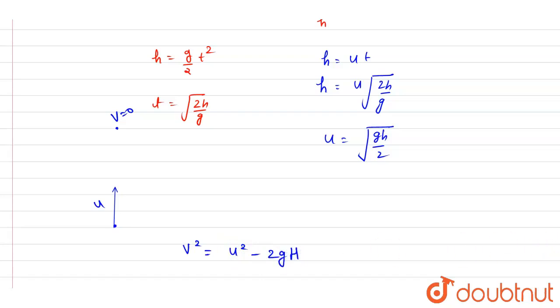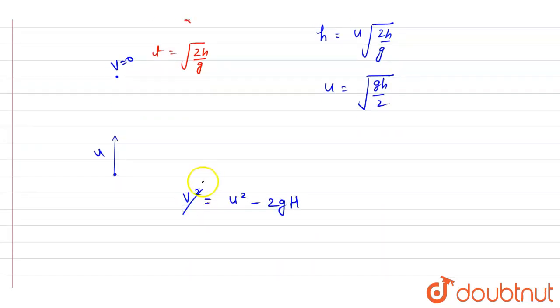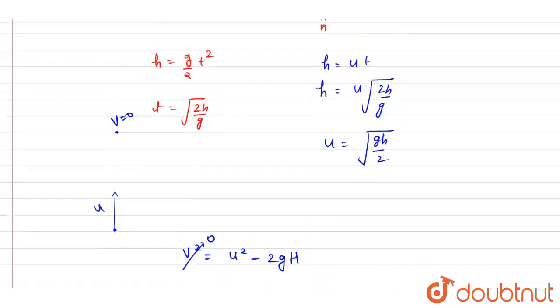That is this. So at maximum height this v will be equals to zero. So h will be equals to u square by 2g. So it is u square h by 2g. So it is h by 4, and this is the answer. It will go up to a maximum height of h by 4.